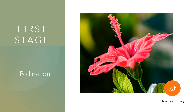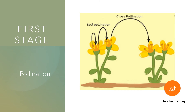The first stage is pollination. Pollination is the transfer of pollen grain from the anther to the stigma. In this stage, the pollen which contains the male cell or gamete is transferred from the anther — the male reproductive part — to the stigma — the female reproductive part. Pollination can occur in the plant itself or to another plant, but it must be of the same species. When it occurs within a plant, it is called self-pollination. When it occurs to another plant of the same species, it is called cross-pollination.